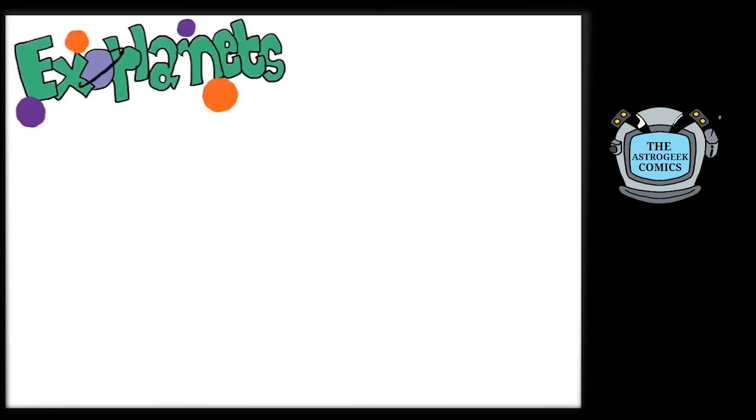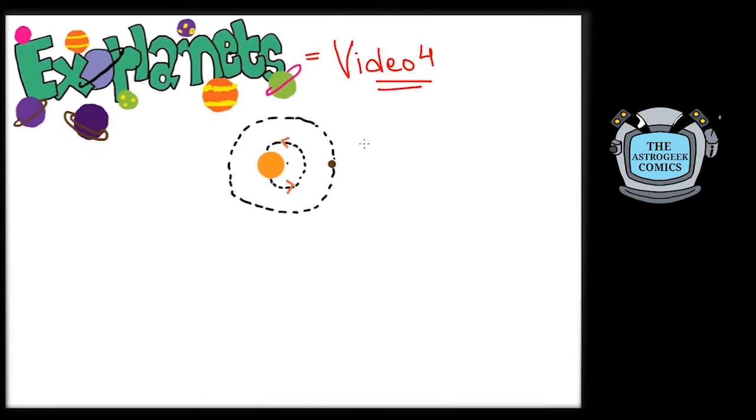In the last video, we learned two methods of finding exoplanets that involved the wobbling of the star because of the planet's gravity. In this video, we are going to explore three other methods of hunting exoplanets.